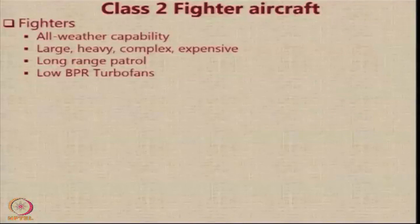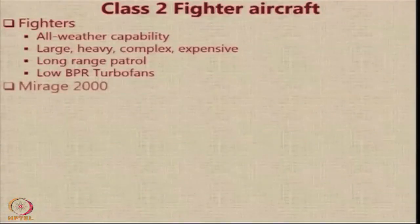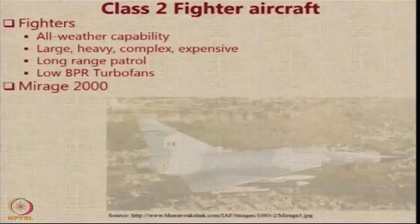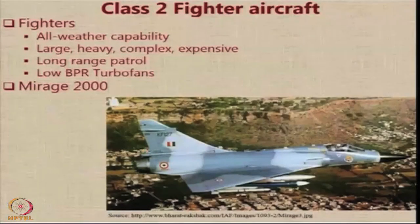Under Class 2 fighter aircraft, we look at all-weather capability. These tend to be large, heavy, complex, and expensive, and they use low bypass ratio turbofans because they are going for long-range patrolling, so they need lower fuel consumption compared to interceptors. The Mirage 2000 from the Indian Air Force is a good example of a Class 2 fighter aircraft.